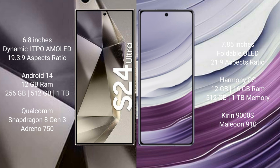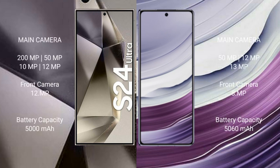The Samsung Galaxy S24 Ultra comes with 12 GB of RAM and 256 GB, 512 GB, or 1 TB of internal storage, powered by the Snapdragon 8 Gen 3 processor. The Huawei Mate X5 comes with 12 GB or 16 GB of RAM and 256 GB, 512 GB, or 1 TB of internal storage, powered by the Kirin 9000S processor.